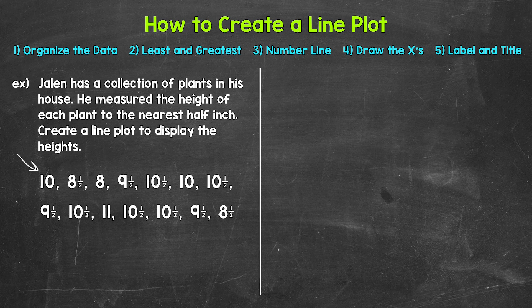Now when creating a line plot, the first thing that we may need to do is organize our data, the numbers we are working with. If your data is already organized, then you can skip this step. For this example, the data isn't organized, so we need to organize it. We're going to put it in order from least to greatest. Let's start with the least, and that looks like it's going to be 8 inches. There was one plant that was 8 inches tall.